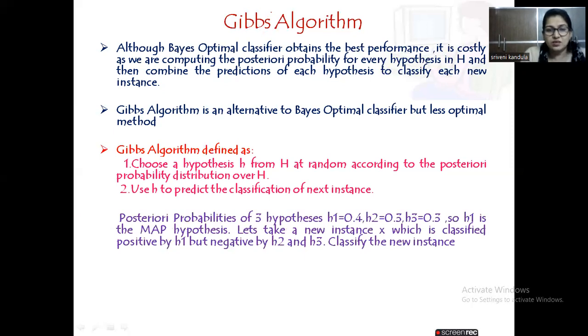According to this, which one has the best value? Which is the MAP hypothesis? h1. So randomly I pick h1, and now I will classify the new instance based on the decision of h1 itself. What is h1 saying? h1 is classifying the instance as positive.